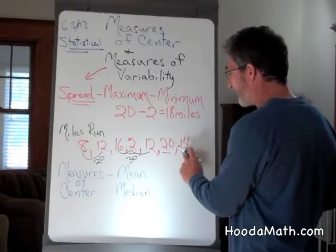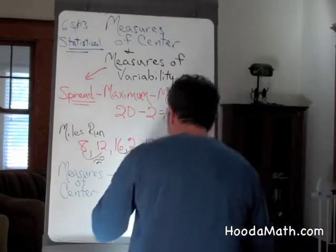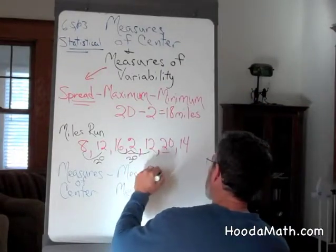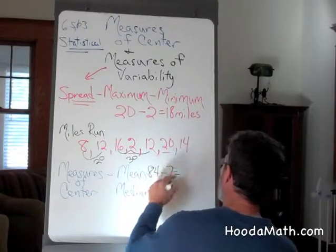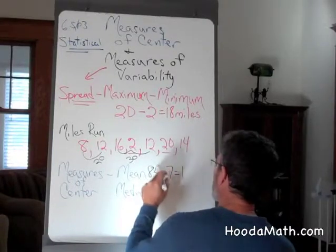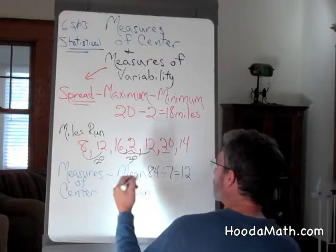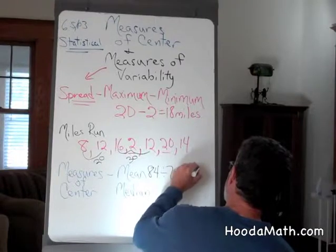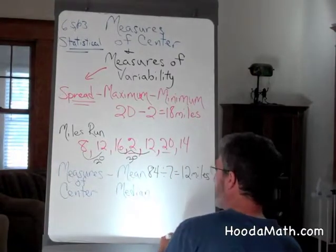70 and 14 would be 84. 84 divided by 7 — 7 goes into 8 once, with a remainder of 1. 7 into 14 is 2. So her mean distance, or her average distance that she ran, was 12 miles per day.